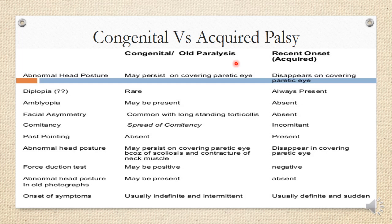Diplopia is not seen in old or congenital cases because over time the patient adapts, whereas it will be present in recent onset or acquired palsies. Amblyopia may or may not be present in congenital cases depending on the amount of deviation and how adaptations have happened, but amblyopia will be absent in patients with acquired palsies — patients who recently had an ocular muscle palsy will not have amblyopia.